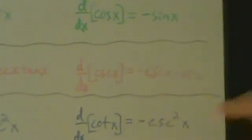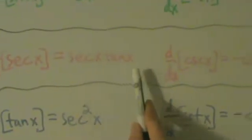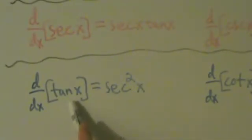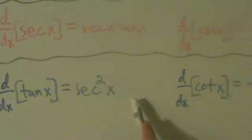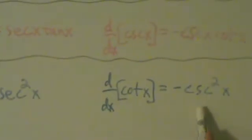All right, I'll zoom in a little bit on that. So derivative of secant is secant tangent. Derivative of cosecant is negative cosecant cotangent. How about here? Derivative of tangent is secant squared. Derivative of cotangent is negative cosecant squared.